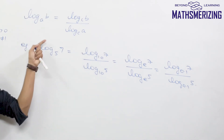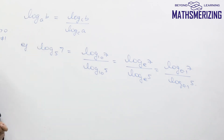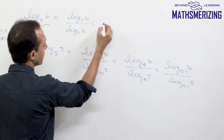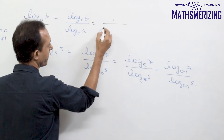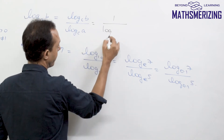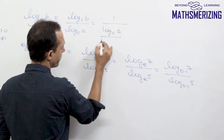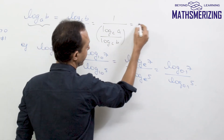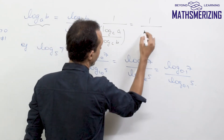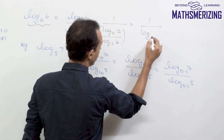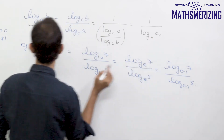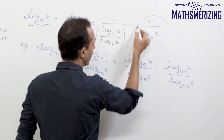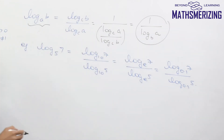So we can change the base of any logarithm as needed. From this property we can also derive that log B base A equals 1 upon log A base B. In other words, log B base A is the reciprocal of log A base B.